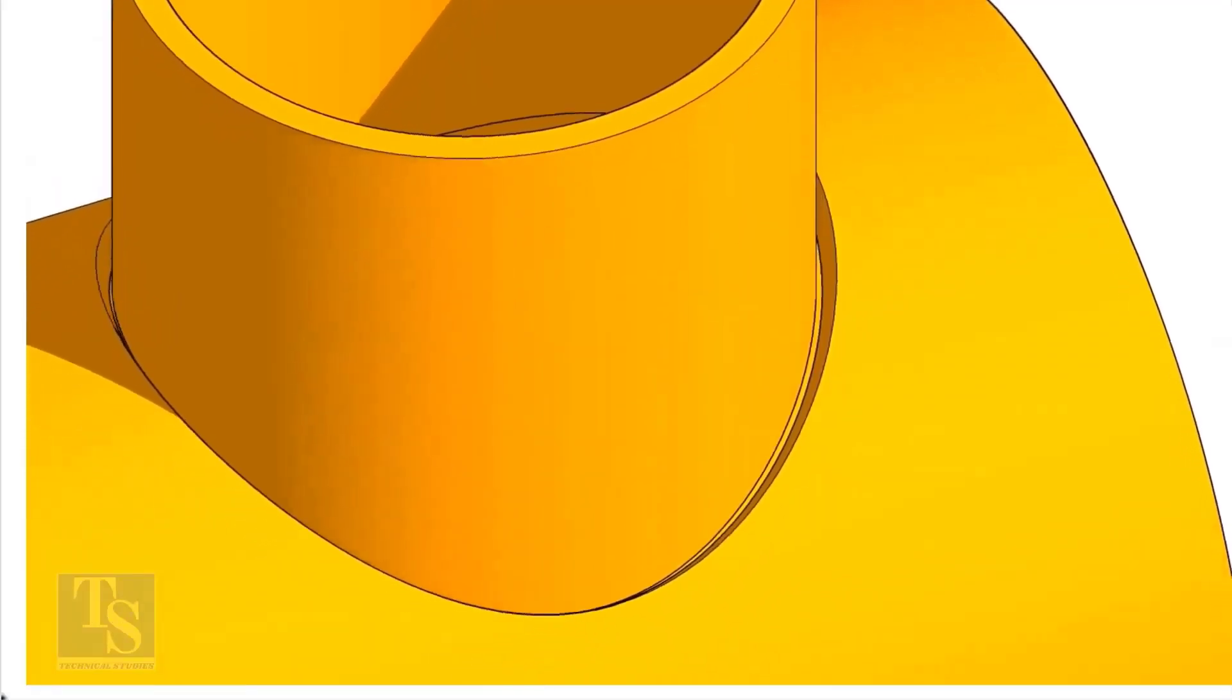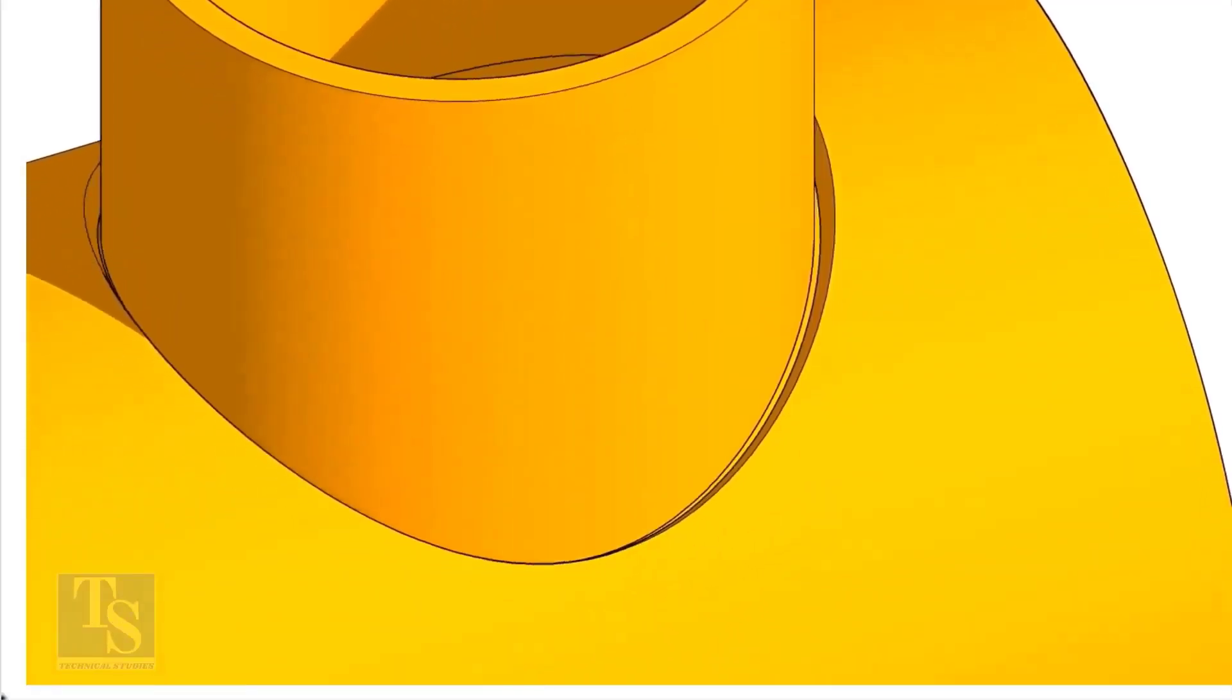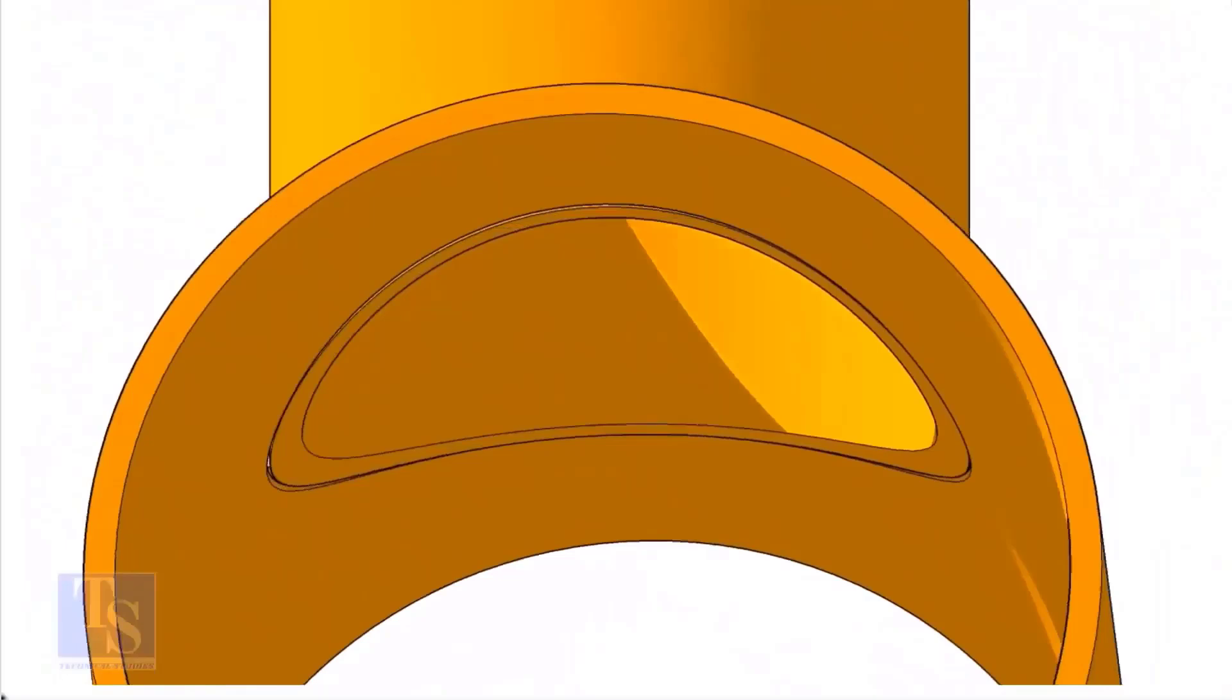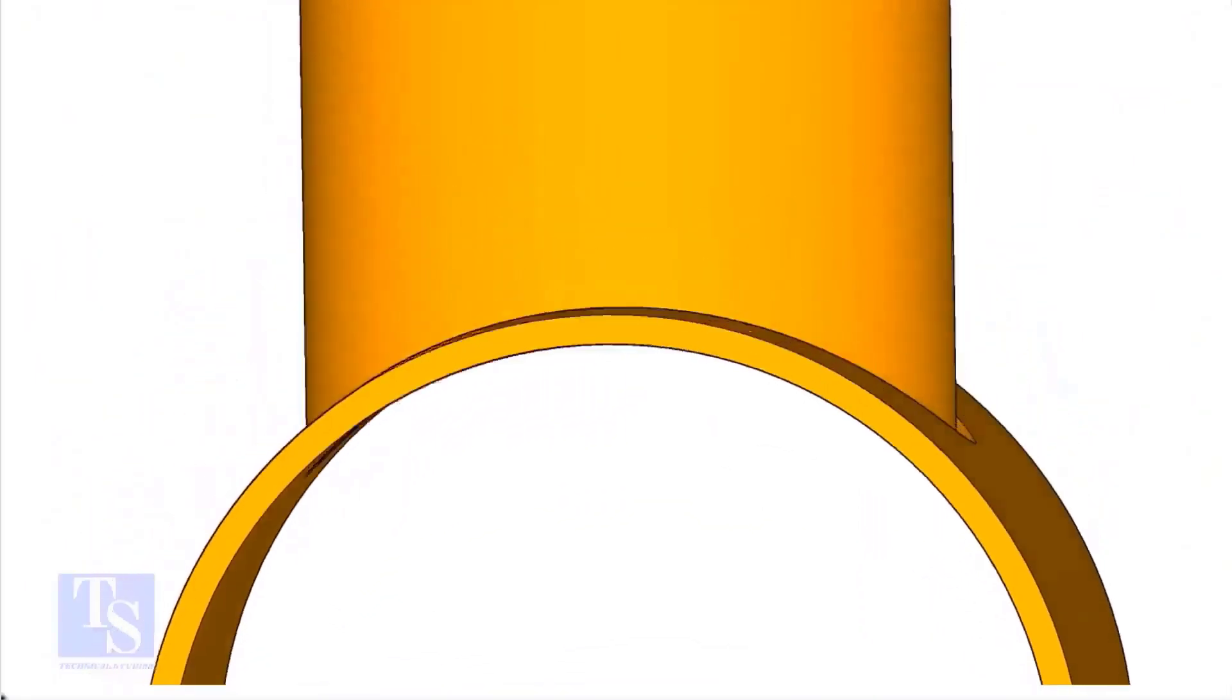On the branch pipe, no bevel preparation is done, only a cutback is done. The end of the branch pipe becomes level with the inside diameter of the header pipe.